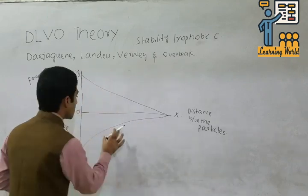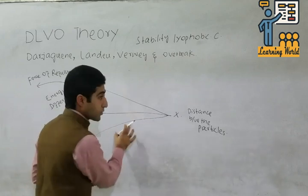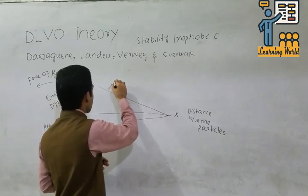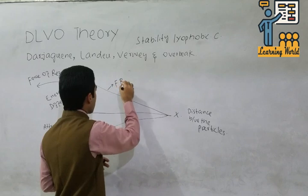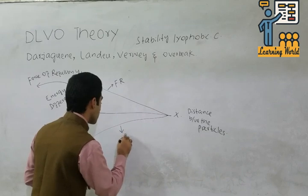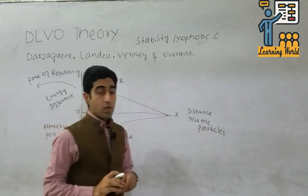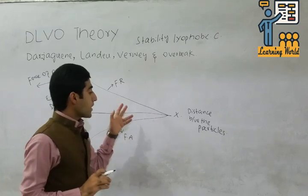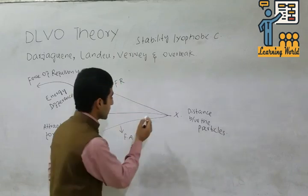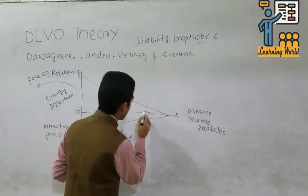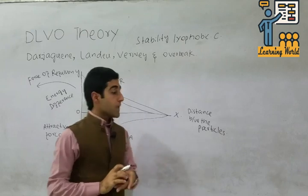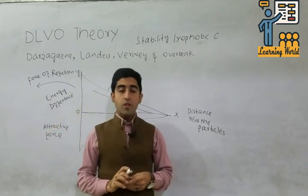This is the force of repulsion and this is the force of attraction. We represent repulsion as FR (force of repulsion) and attraction as FA (force of attraction). If we add these two curves, the net curve is obtained. The net curve shows that if two particles have different charges they will attract each other.